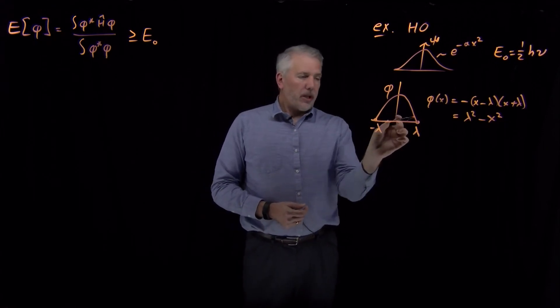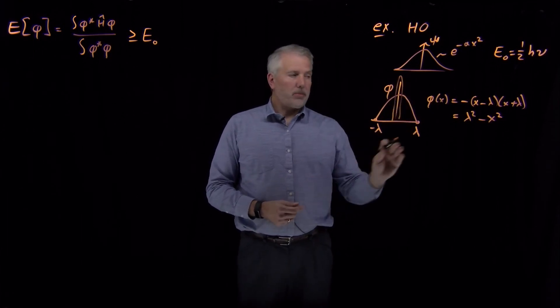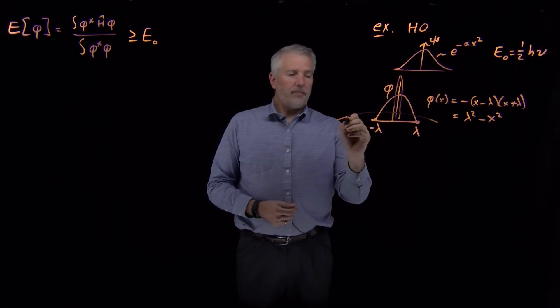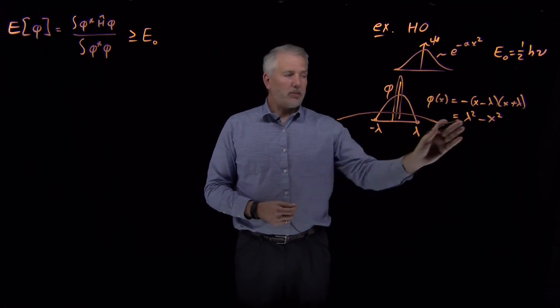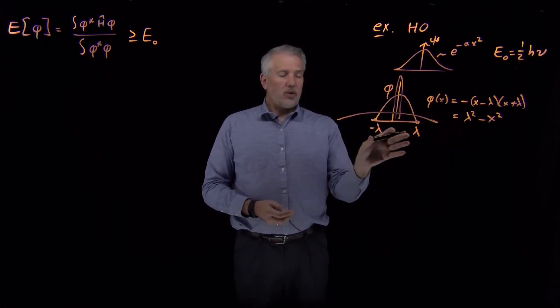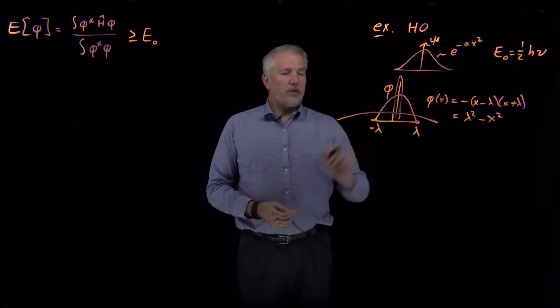Perhaps lambda could be a small number, in which case my wave function would look like that, or perhaps lambda is a large number, in which case my wave function would look like that. I'll save until later the decision of how big to make lambda. Right now, I'm just going to leave lambda in there as a variable. The question is, how good or bad is that guess for that variational trial function?